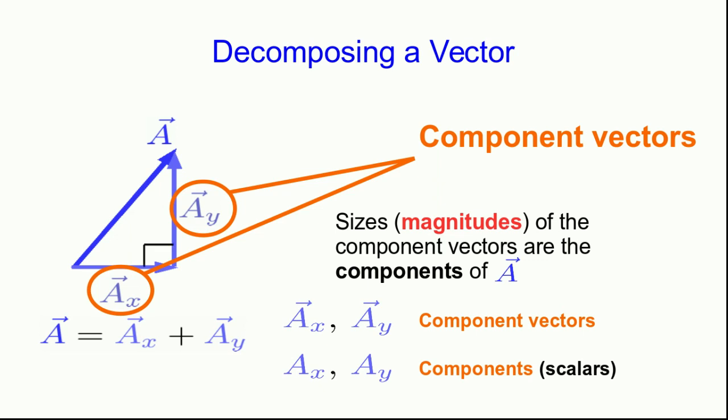Notice the component vectors must be perpendicular to each other because they point along the axes and the axes were perpendicular to each other. And so whenever we do a vector decomposition the original vector is always the hypotenuse of the triangle formed with its component vectors.